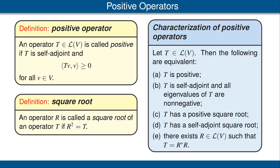We had this characterization of positive operators, which gives several alternative ways to think about positive operators. The theorem says that if T is an operator on V, then the following are equivalent. Property A is that T is positive. Property B is that T is self-adjoint and all eigenvalues of T are non-negative. Property C is that T has a positive square root. Property D is that T has a self-adjoint square root. And property E is that there exists an operator R on V such that T is equal to R star R.